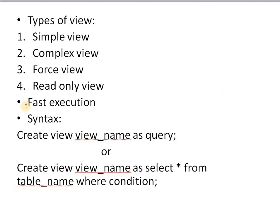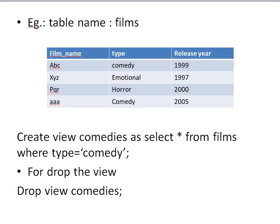So how do you create a view? The CREATE VIEW statement is used. The syntax is: CREATE VIEW, then the view name you want to provide, followed by the AS keyword, and then your PostgreSQL query. Here is another syntax you can identify easily: CREATE VIEW view_name AS SELECT * FROM table_name WHERE any_condition. So you provide a SQL query after the AS keyword.